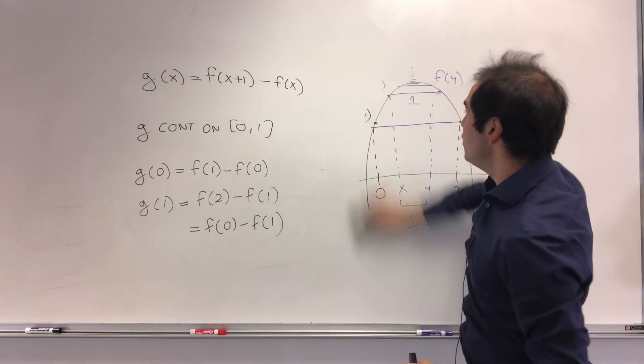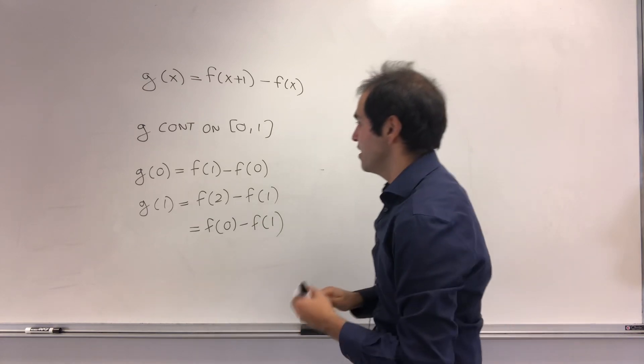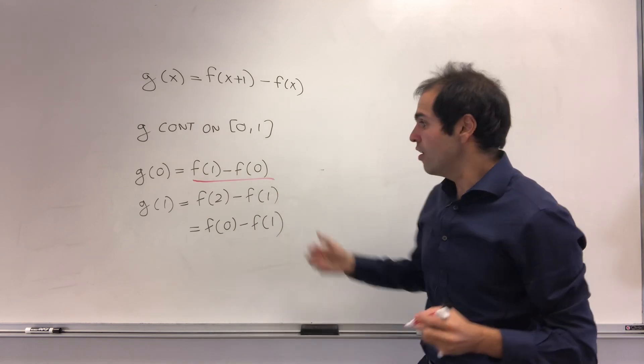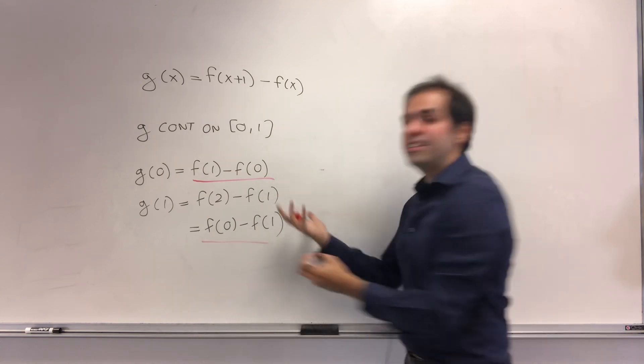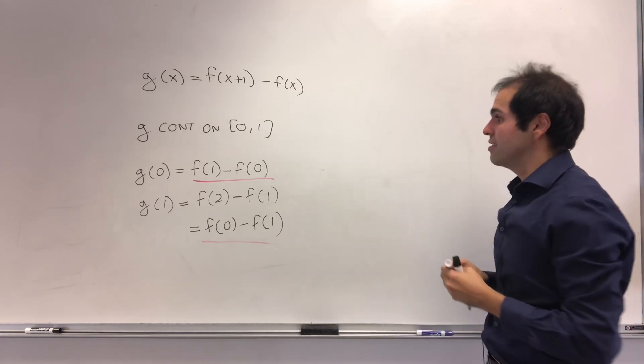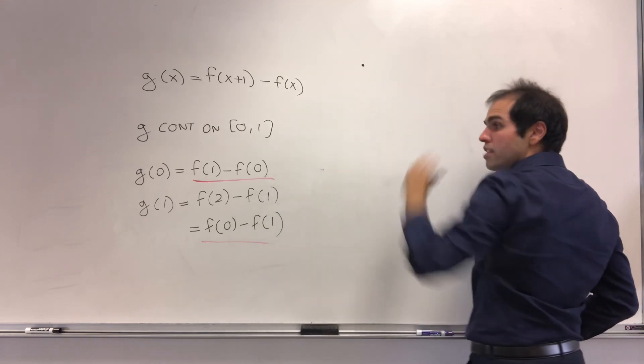So this helper function g actually has nice properties. At 0, it's f(1) - f(0), but at 1, it has the opposite sign. It literally changes signs. Because if this is positive, then the other value has to be negative.